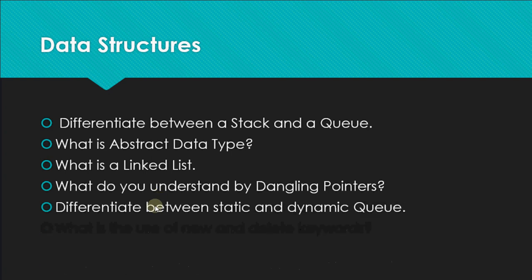Differentiate between a static and a dynamic queue (or static and dynamic stack). A static queue is when you implement queue operations using an array. A dynamic queue is when you implement it using a linked list — meaning memory is allocated and de-allocated depending on the requirement.